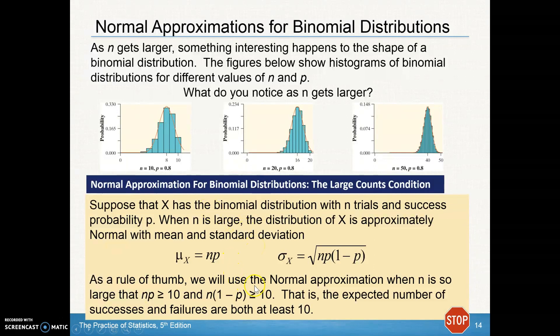As a rule of thumb, we'll use that normal approximation when N is very large. We won't use it unless n times p is greater than or equal to 10, and it has to be both, and the n times the probability of failure, 1 minus p, is also greater than or equal to 10. In other words, both the expected number of successes and failures are both at least 10.